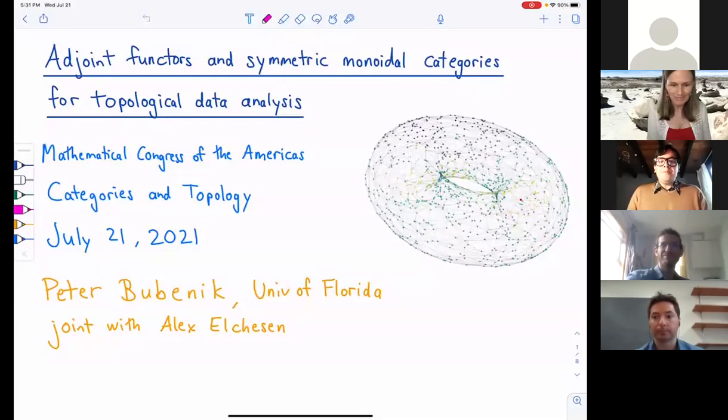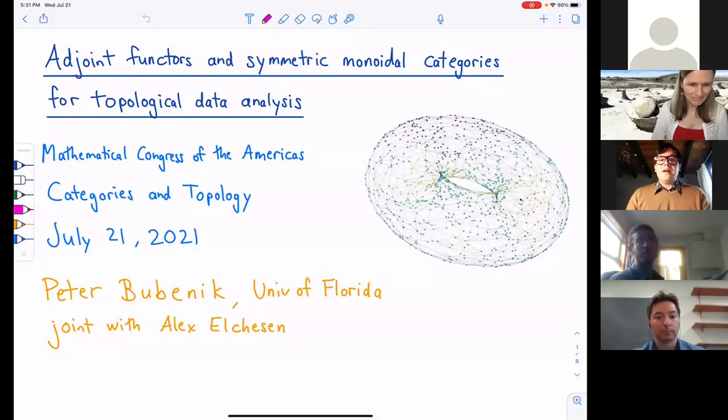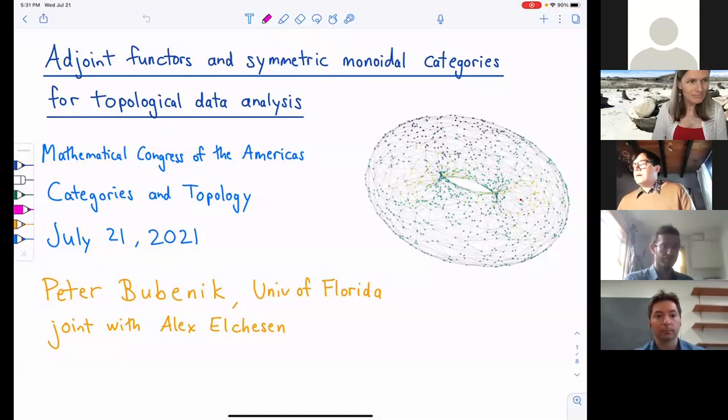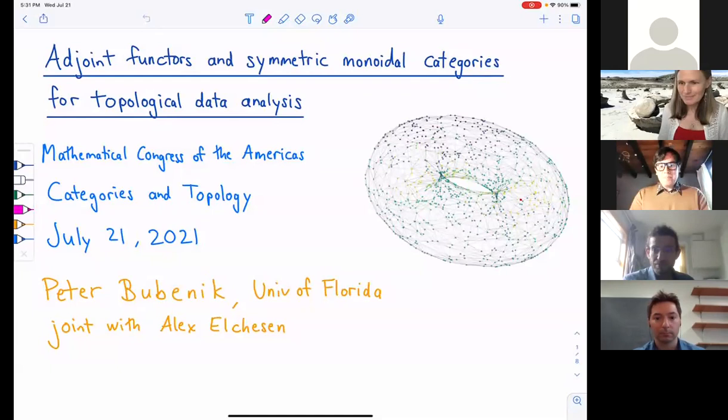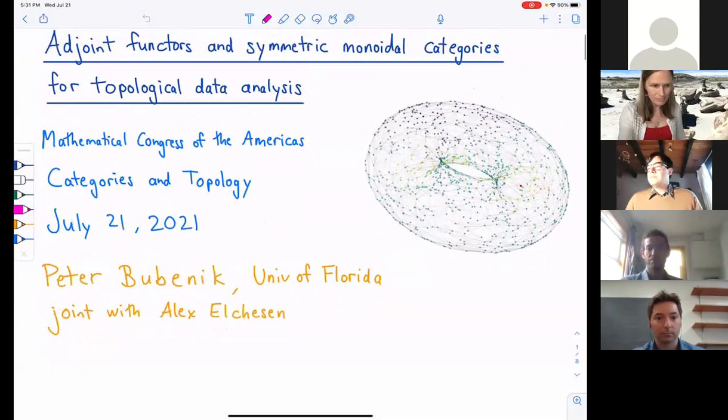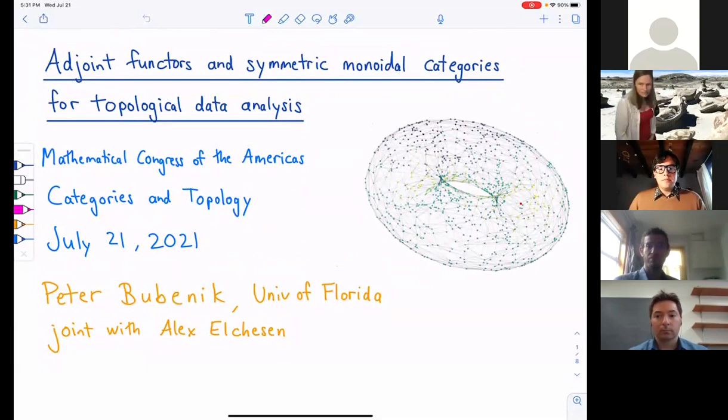Here is Peter Bubenig from the University of Florida. The title of this talk is the Joint Functor and Symmetric Monoidal Categories for Data Analysis. Yes, please go ahead, Peter. Great. Yeah, so thank you very much to the organizers for putting together this session and inviting me to speak here today. I'll be presenting work of one of my PhD students, Alex Eltison, and the goal of this project used categories and topology to develop the theory of topological data analysis.